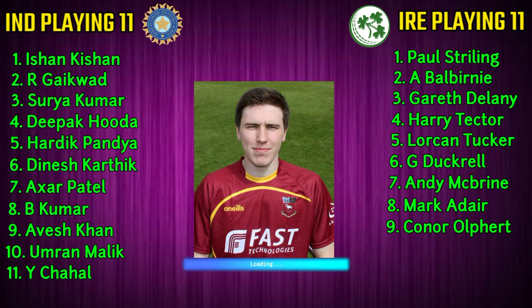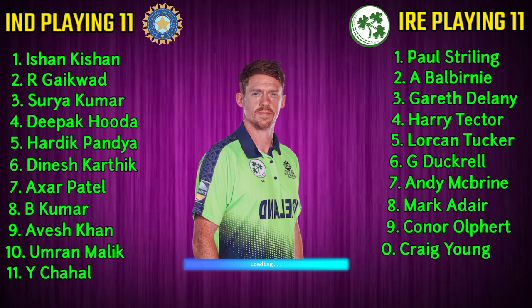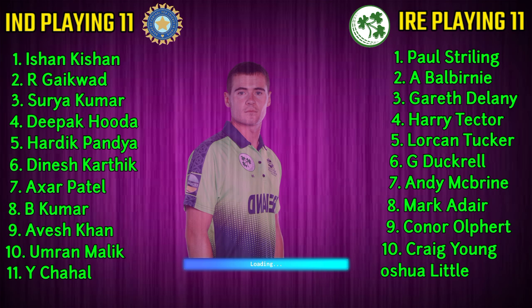Ireland team bowlers: Number 8, Mark Adair, fast bowler. Number 9, Connor Olphert, fast bowler. Number 10, Craig Young, fast bowler. Number 11, Joshua Little, fast bowler.